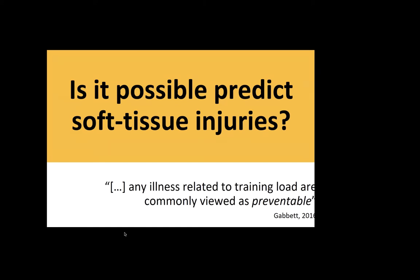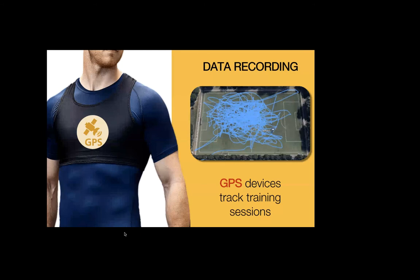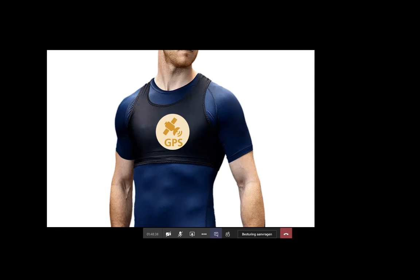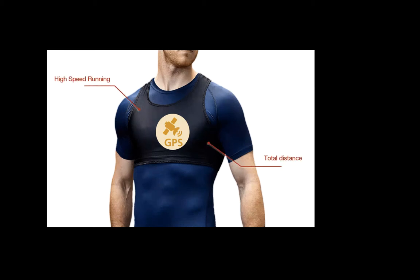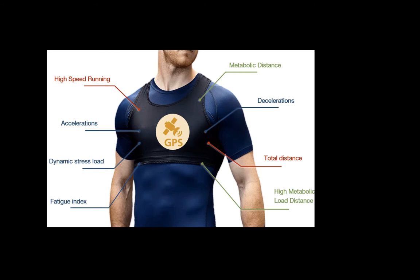Gabet in his previous work states that any illness related to load is commonly viewed as preventable. So we recorded data from GPS from an Italian football team for an entire season. We extracted the trace of each match and each training session, and extracted features describing the training workload performed by each player — kinematic features such as high-speed running distance and total distance, and metabolic features such as metabolic distance or high metabolic load distance.